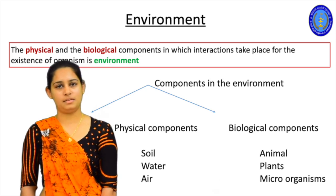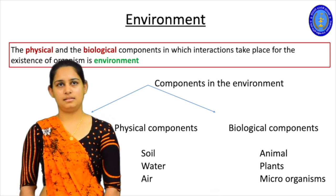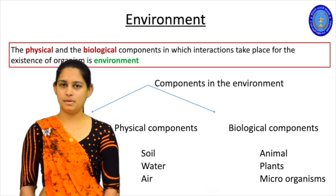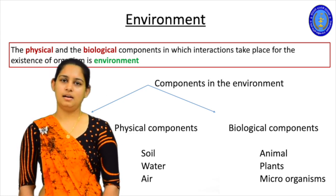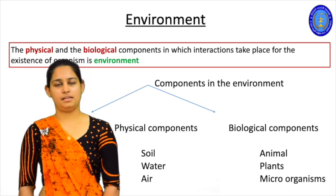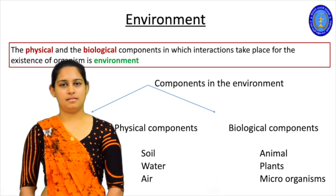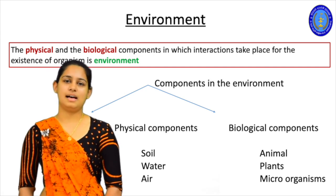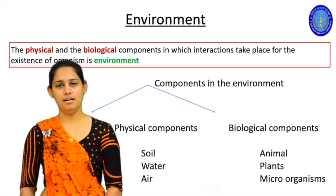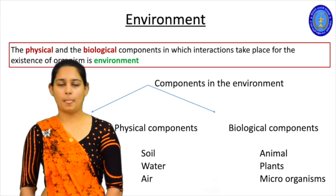In this definition you find two important words: physical components and biological components. Physical components are the non-living things — for example, soil, water, and air. Along with the physical components, there are biological components as well. The biological components are all the types of living organisms in the environment, such as animals, plants, and microorganisms.